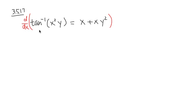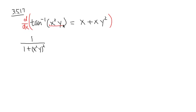The derivative of inverse tangent is 1 over 1 plus whatever you have inside, which is x squared times y, placed inside and squared. Then we check the chain rule: we must multiply by the derivative of the inside, which is x squared times y. Since this is a product, it requires the product rule.